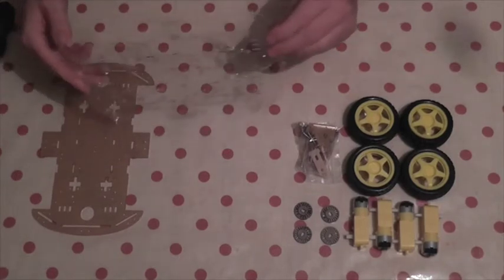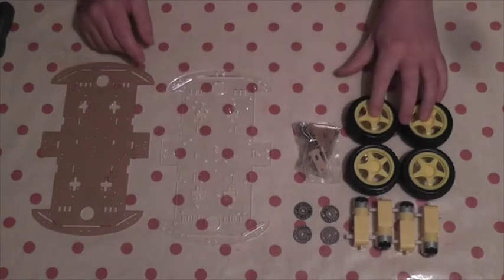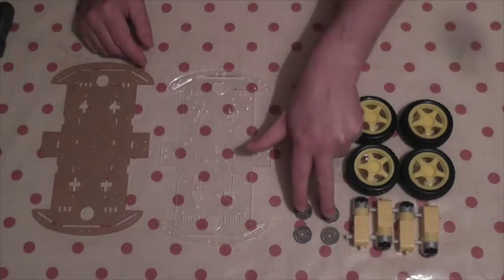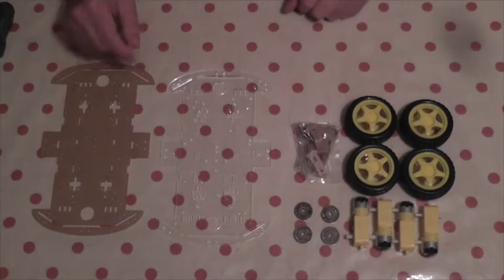Also in the kit, there are four plastic wheels, four DC motors, four encoding discs, of which we'll talk about in a moment, and some spacers and nuts and bolts for putting it all together.